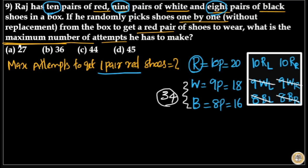Now we apply the worst case for the red shoes. He picks all 10 left foot red shoes, which don't pair with a right foot shoe. So he has to take one more right foot red shoe from the box, giving him one complete pair.